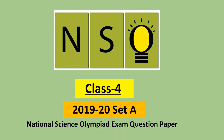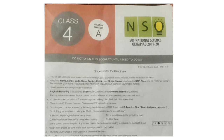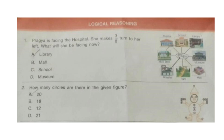Welcome to our channel Olympiad Trainer. In this video I am going to show you the question paper of NSO, that is National Science Olympiad exam, for class 4, year 2019-20, set A. The question paper comprises three sections: logical reasoning, science, and achievers section. There are 35 questions and in this video we are going to see questions 1 to 20. For questions 21 to 40 please watch part 2. Let's start with the first section, logical reasoning.